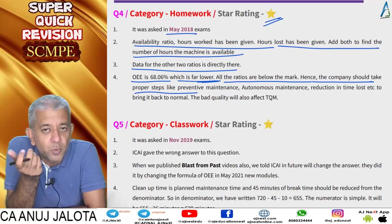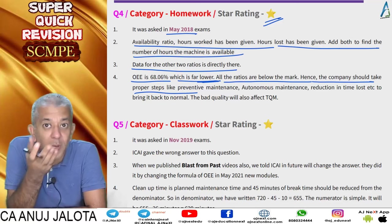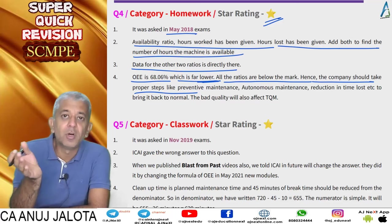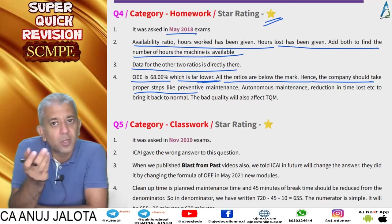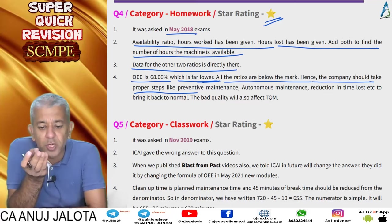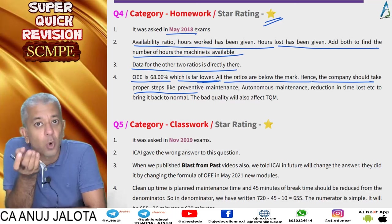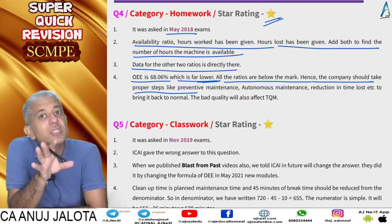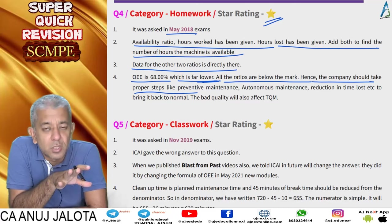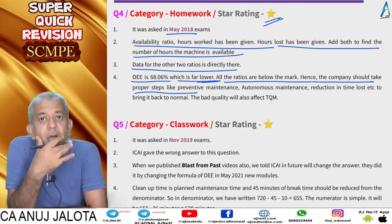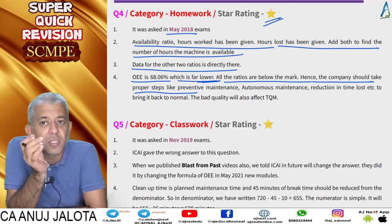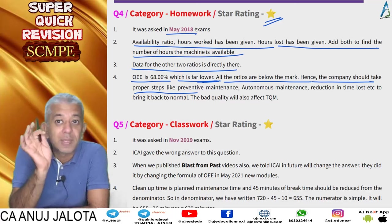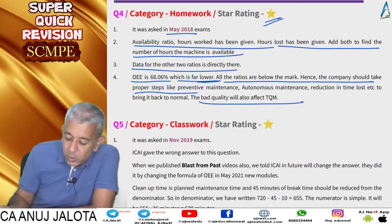To improve OEE, all three ratios must improve. To improve availability ratio, ensure breakdowns and setup time are falling, workers can repair machines faster. Use scheduled or preventive maintenance and autonomous maintenance to reduce waiting time. Ensure machines are maintained so product quality is good and worker efficiency is not affected. Also note: bad product quality will hamper TQM.